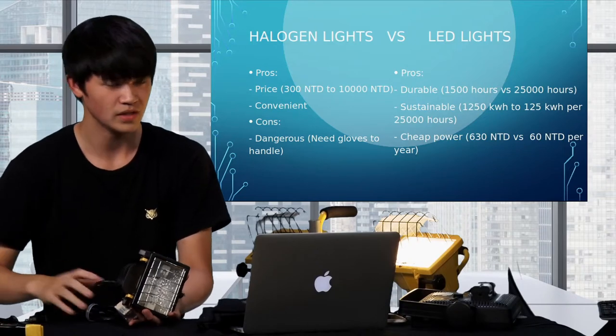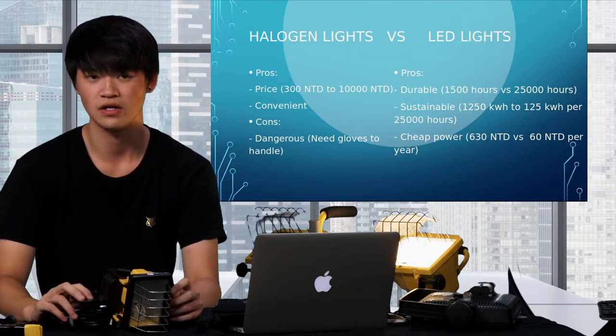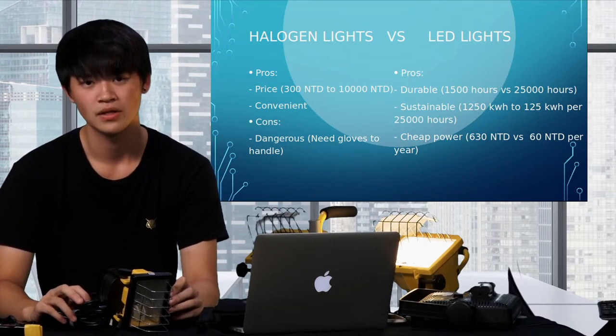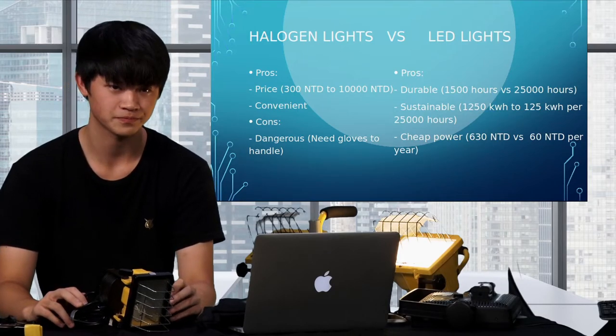Because halogen lights are small, they are really portable in their boxes and convenient for quick setups. On the other hand, LED lights are extremely sustainable, have a longer lifetime, and use much cheaper power compared to halogen lights. One important safety note: these cookie-baking gloves are essential because halogen lights get overwhelmingly hot — it's impossible to touch them with bare hands. Always wear these gloves whenever you want to move them or turn them on.